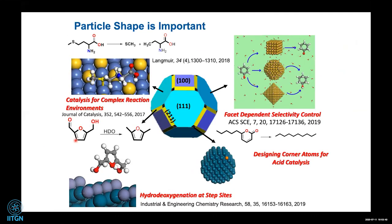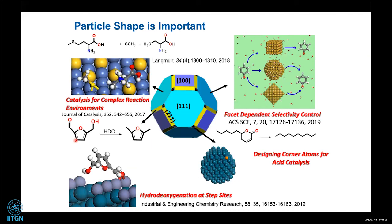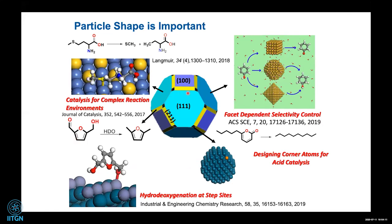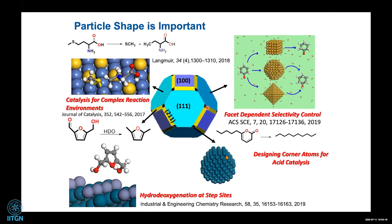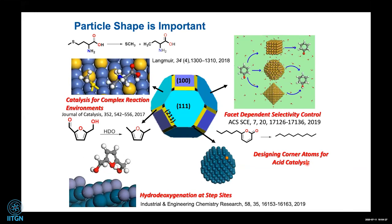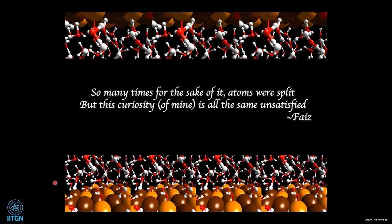Thinking about engineering particle shapes step by step: terrace sites exercise facet-dependent selectivity control; in complex reaction environments, amino acids and proteins interact with transition metal surfaces; step sites can be engineered with oxophilic metals to improve C–O bond scission; and corner atoms can be engineered — for example, in a solvated environment you can make Brønsted acid sites on corner atoms for acid catalysis. A transition metal acting like an acid catalyst is a really exciting opportunity.